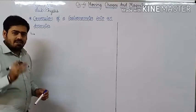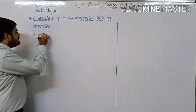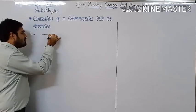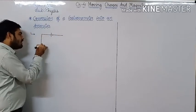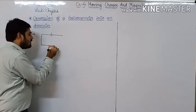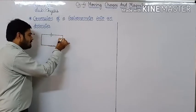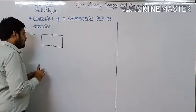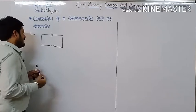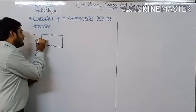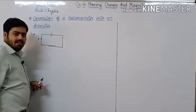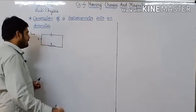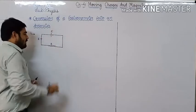Right now, I am considering one simple circuit. This is the battery, and through this battery, suppose I amount of electric current is flowing through this resistor R. And here, battery of emf E.